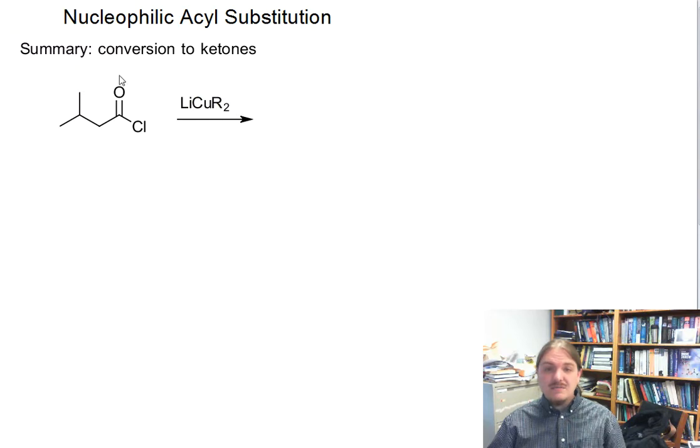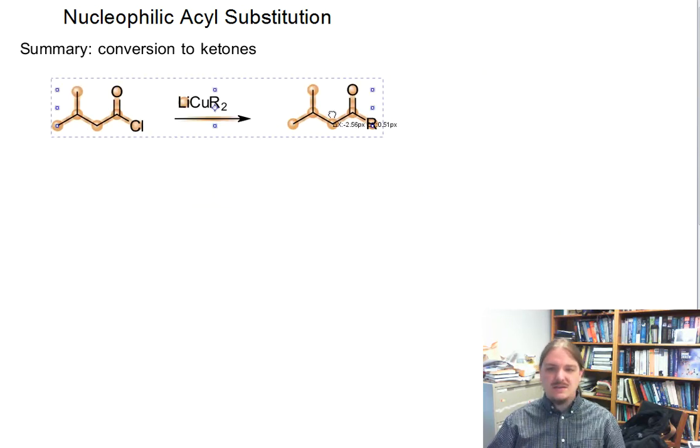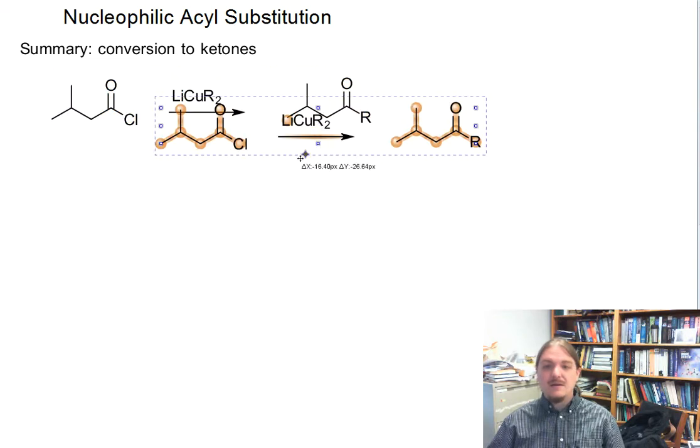Acid chlorides react with the Gilman reagents or lithium dialkyl cuprate reagents to form ketones through nucleophilic substitution. Gilman reagents are less reactive. Ketones are less reactive, so this reaction tends to stop here.